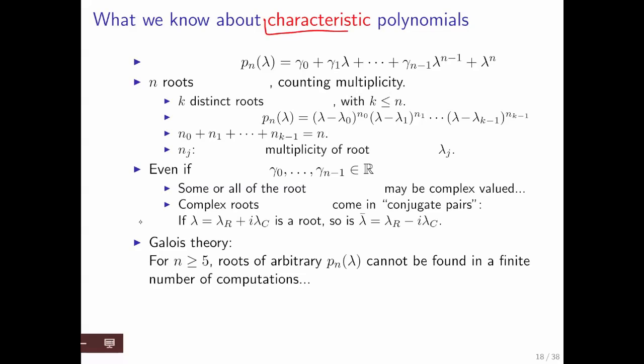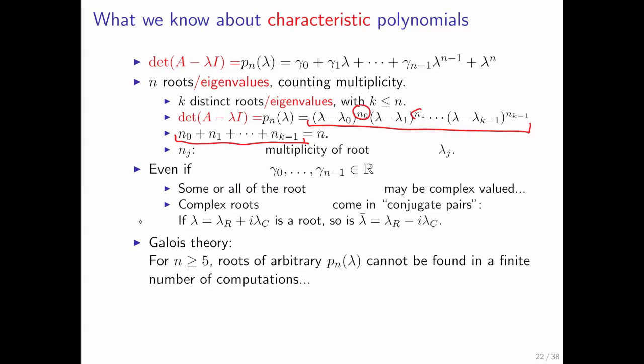We are concerning ourselves specifically with characteristic polynomials. What that means is that the nth degree polynomial comes from computing the determinant of A minus lambda I. Since that gives rise to an nth degree polynomial, you end up with n eigenvalues, which are the roots of that polynomial. We have k distinct eigenvalues, and the multiplicity again has to add up to n, so these powers have to add up to n. The power to which a particular term is raised is known as the algebraic multiplicity of the eigenvalue that appears in that term.